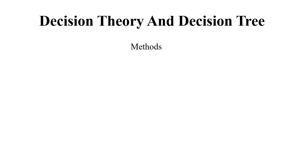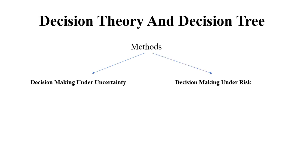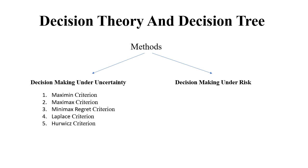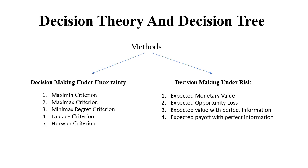Before starting with the problem sum, let us first understand that under the topic decision theory there are two methods: one, decision making under uncertainty, and second, decision making under risk. Under decision making under uncertainty there are five types of problem sums: maximin criterion, maximax criterion, minimax regret criterion, Laplace criterion, and Hurwicz criterion. Under decision making under risk we have four types: expected monetary value, expected opportunity loss, expected value with perfect information, and expected payoff with perfect information.